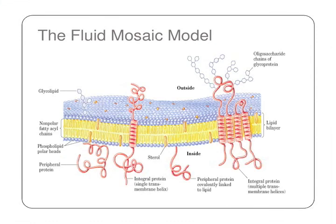This next slide shows the fluid mosaic model — it's very complex. You'll see the glycolipids on the outside, and you'll also notice the nonpolar fatty acid chains running through the membrane.